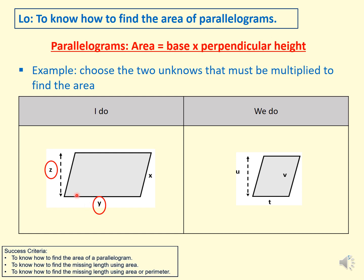Pause the video for 10 seconds and have a go with the video question. We need to know which two values to multiply together to find the area of a parallelogram: perpendicular height and base, which must form a 90-degree right angle. Here I have u as perpendicular height and t as base — the angle between u and t is a right angle. So I use u and t, and completely ignore v, which is the diagonal line.